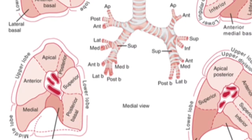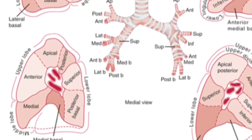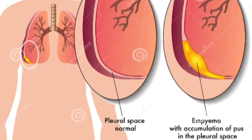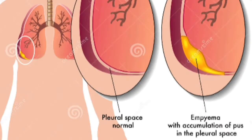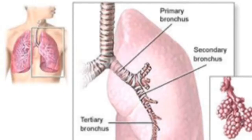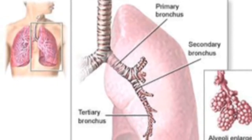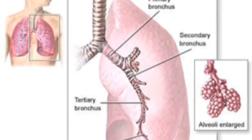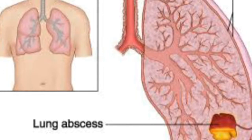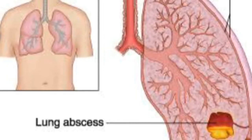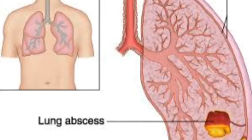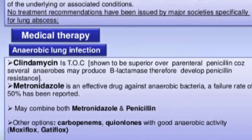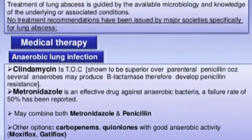Lung abscess is a suppurative infection of the lung parenchyma which results in tissue necrosis and cavitation. The cavity has a wall which is single and usually measures about 2 cm or greater in diameter, and usually communicates with the bronchus. The cavity is filled with purulent material. Multiple cavities of lesser diameter may be seen and this is designated as necrotizing pneumonia.